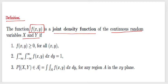The first condition to declare f(x, y) as a joint density function is that it should be positive or zero — that means f(x, y) should be greater than or equal to zero. The second condition is that the sum of all the joint probability density function values equals 1. So when we integrate with respect to x and y from minus infinity to plus infinity, we will get 1.